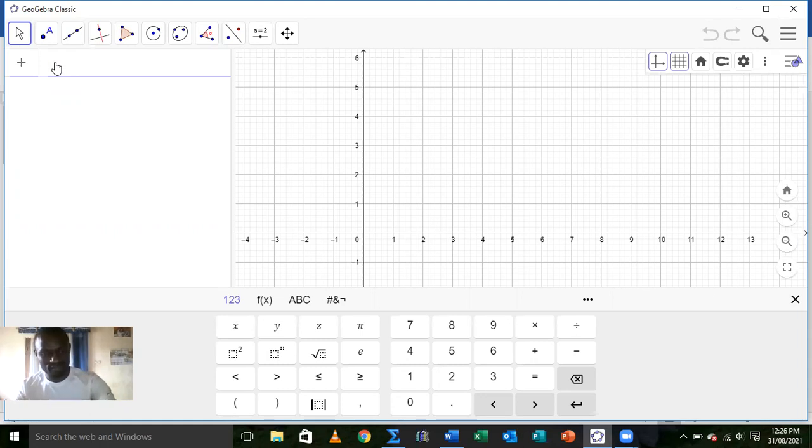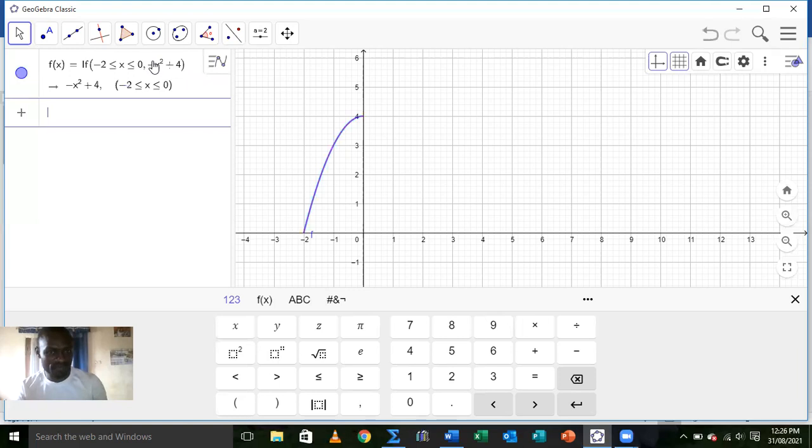The first one will be - please follow along - function. We choose the function from function, start value and end value. The function is -x² + 4. Start value is -2 and end value is 0. That's the first part of the function.